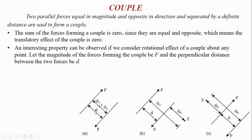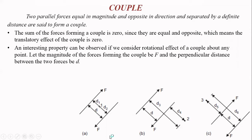If you see the figure, F and F — these two forces are equal in magnitude. The magnitude is the same, F and F. The magnitudes must be equal — it may be 10 and 10, 20 and 20, 30 and 30 — but opposite in direction: one going upward and one going downward, with distance D between them. Two parallel forces equal in magnitude and opposite in direction separated by a definite distance form a couple.